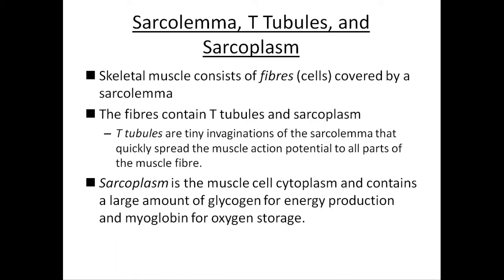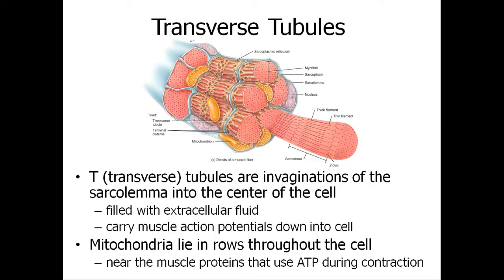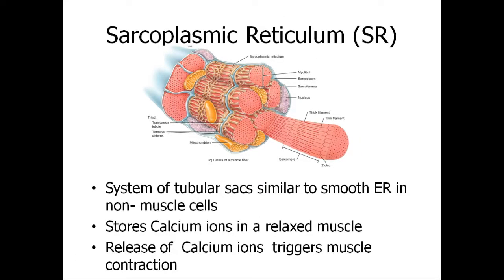Skeletal muscle consists of fibers covered by a sarcolemma. The fibers contain T-tubules and sarcoplasm. T-tubules are tiny invaginations of the sarcolemma that quickly spread the muscle action potential to all parts of the muscle fiber. Sarcoplasm is the muscle cell cytoplasm and contains a large amount of glycogen for energy production and myoglobin for oxygen storage. The mitochondria lies in rows throughout the cell near the muscle proteins that use ATP during contraction. The sarcoplasmic reticulum stores calcium ions in a relaxed muscle, and the release of calcium ions triggers muscle contraction.